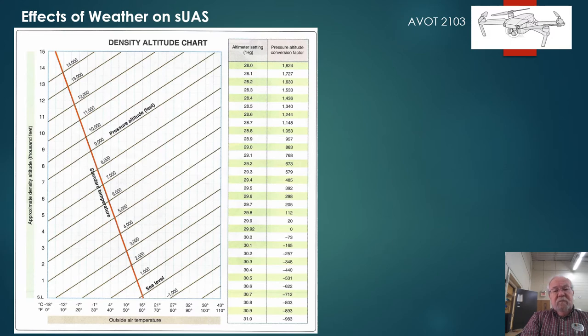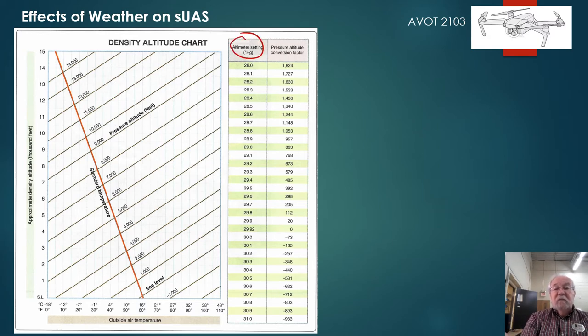Here's the famous density altitude chart. We've worked through this many times — as a review, remember these are the altimeter settings. Whatever test question you have, it will give you an altimeter setting. For example, let's say 30.40. The test question will also give you a temperature and an airport elevation.